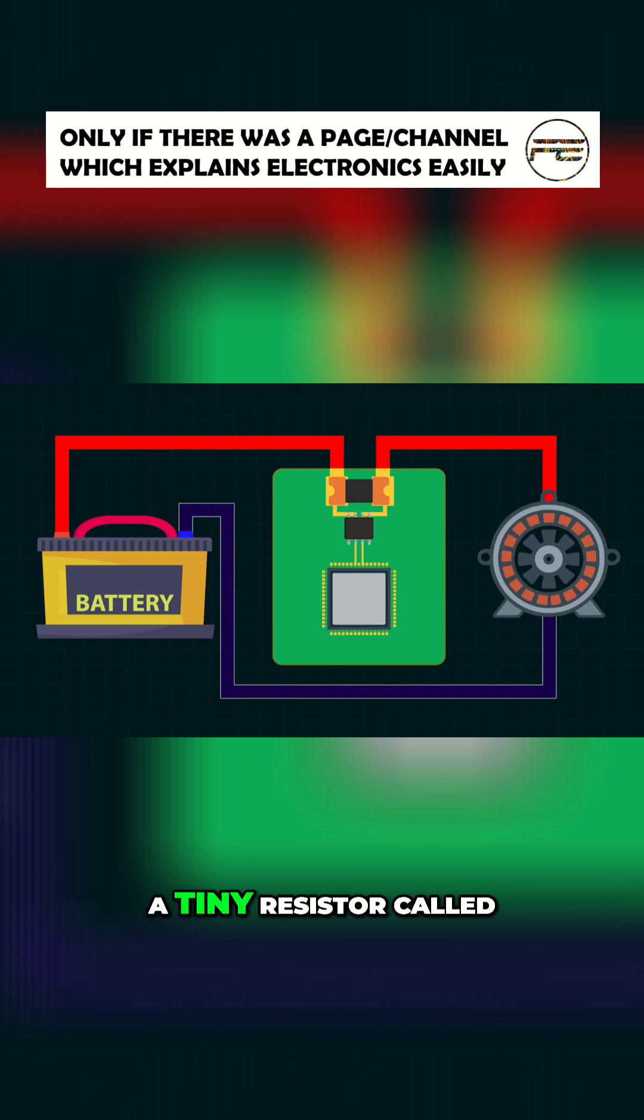In shunt-based sensing, a tiny resistor called a shunt resistor is placed in series with the battery or load.